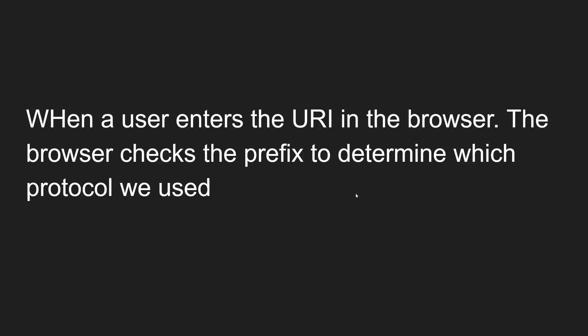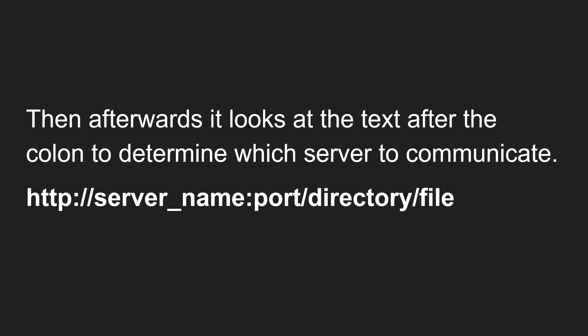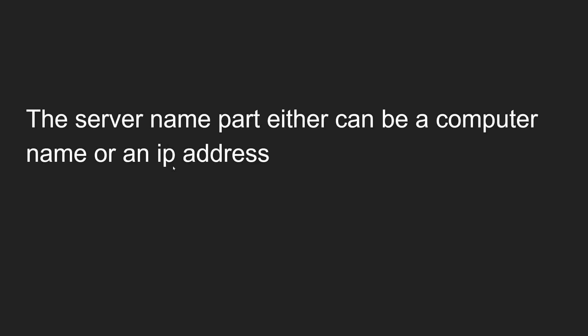When a user enters a URL in the address bar, the browser checks the prefix to determine which protocol is being used. We have tried HTTP, file, and mailto. After identifying the protocol, it looks at the text after the colon to determine which server to communicate with. The URI structure looks like: http://servername:port/directory/file — the first part denotes the protocol, followed by the server name and port.